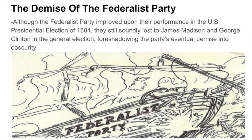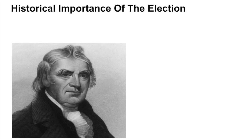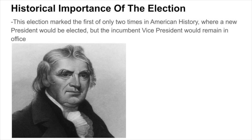It is important to note that some Democratic-Republican electors refused to cast their votes for James Madison, with George Clinton receiving six of these electoral votes. This election marked the first of only two times in American history where a new president would be elected, but the incumbent vice president would remain in office.